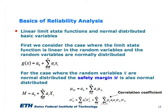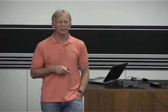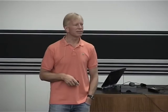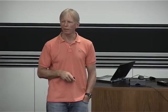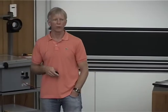I am introducing now the concept of linear limit state functions and normally distributed random variables. If the limit state function is linear in the random variables and we assume all random variables are normally distributed, we can write the limit state function as a linear function in terms of coefficients a and basic random variables x_i. If the basic random variables are all normally distributed, then a linear combination of normally distributed random variables also results in a normally distributed random variable itself.